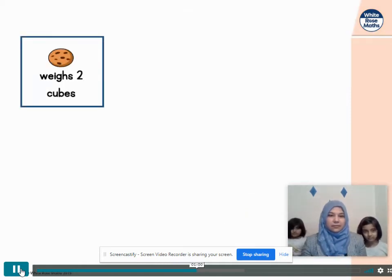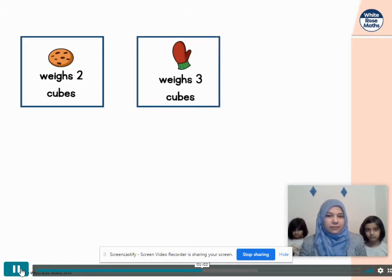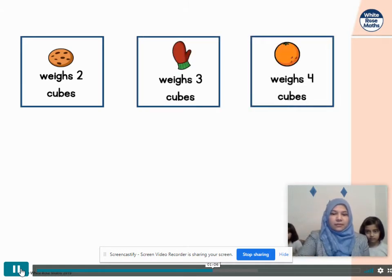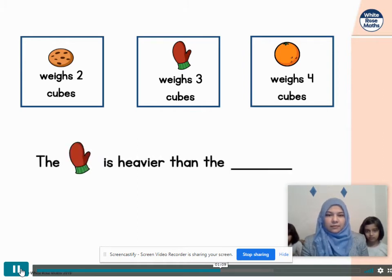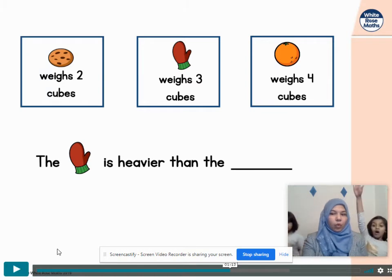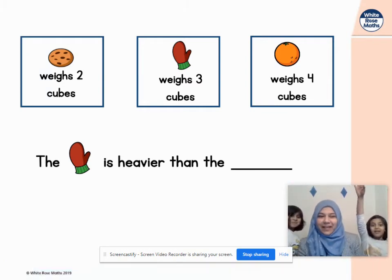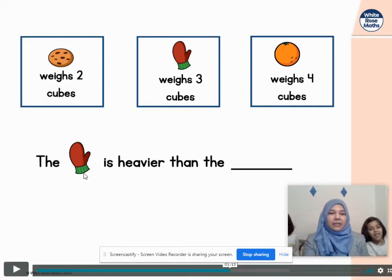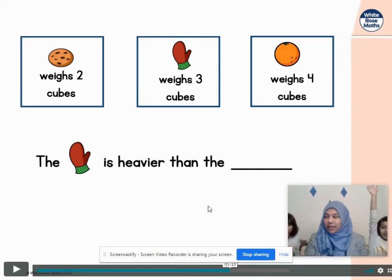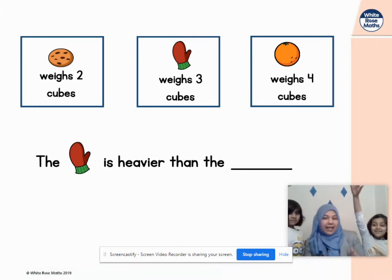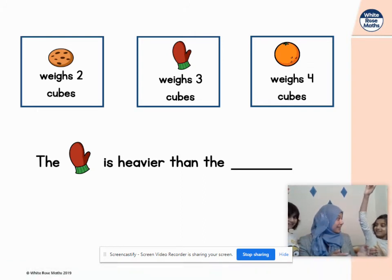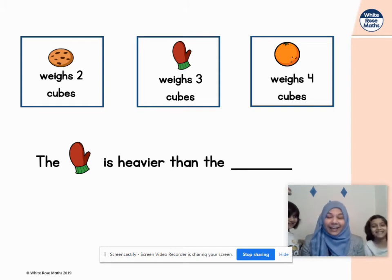If a cookie weighs two cubes and a mitten weighs three cubes and an orange weighs four cubes, do you think you could complete the sentence? Can we complete the sentence? Let's listen to the sentence first girls. It says, the mitten is heavier than the... Cookie! Say it. A cookie. Well done.